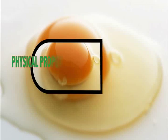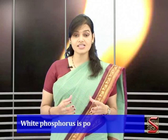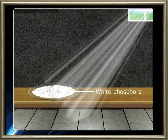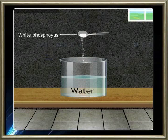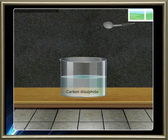Let's take a look at the physical properties of White Phosphorus. White Phosphorus is a soft, waxy solid that smells like garlic. White Phosphorus is poisonous in nature. It turns yellowish on exposure to light, and for this reason it is also called Yellow Phosphorus. White Phosphorus is not soluble in water but is soluble in carbon disulfide.